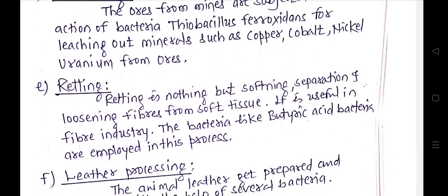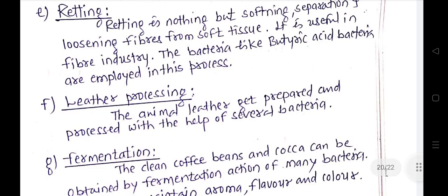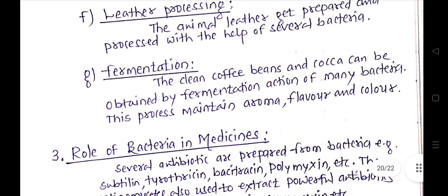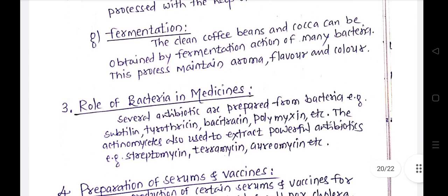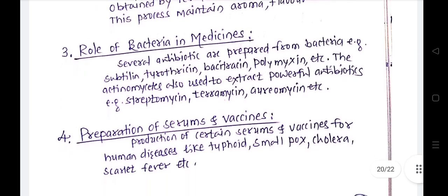Retting is the softening and separation of fibers from soft tissue — it occurs in leather and fiber processing, where butyric acid bacteria play an important role. In the leather industry, animal leather is prepared and processed with the help of several kinds of bacteria. Bacteria are also important in fermentation; coffee beans and cocoa are fermented to maintain their aroma, flavor, and color.